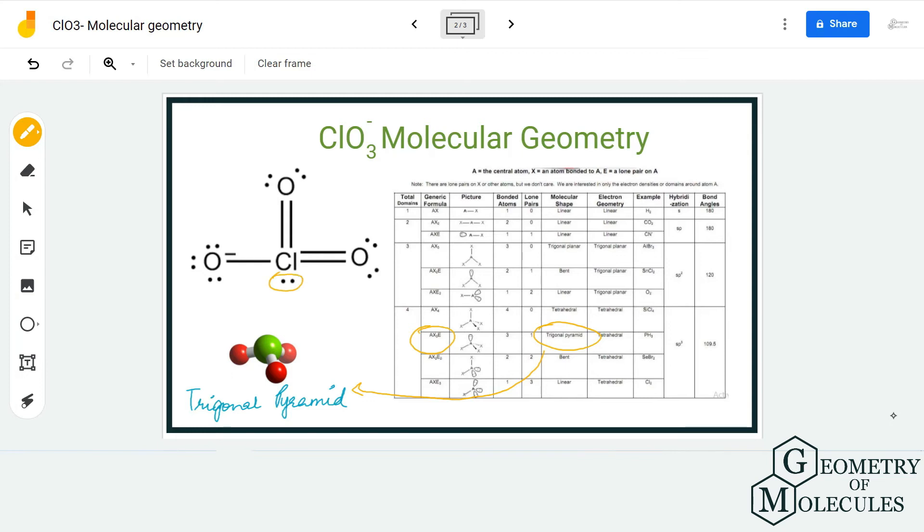If you look at the molecule in the 3D structure, you can see that it has trigonal pyramidal molecular geometry. Using AXE notation or steric number, you can come to this conclusion. Using these two methods, you can easily find the molecular geometry of any given molecule.